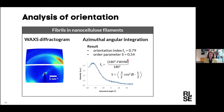The analysis of degree of orientation can be done in different ways. There are two examples: orientation index and order parameter. As you see, they are not the same digit, which indicates that when you compare examples it is very important to use the same analysis method.